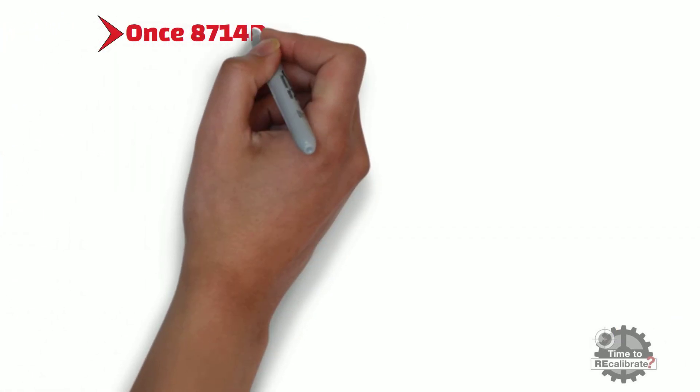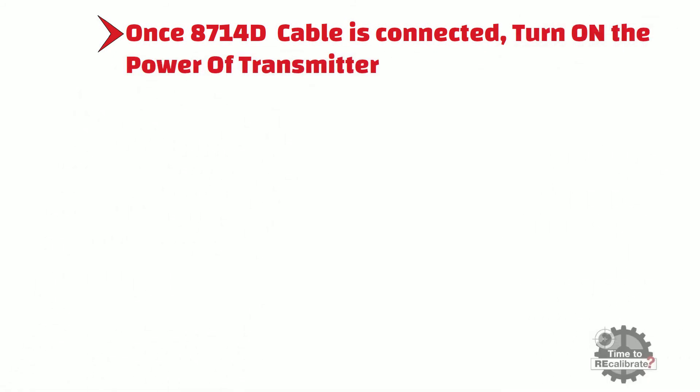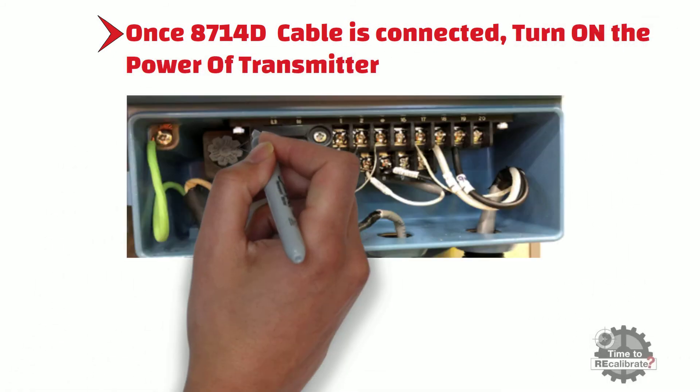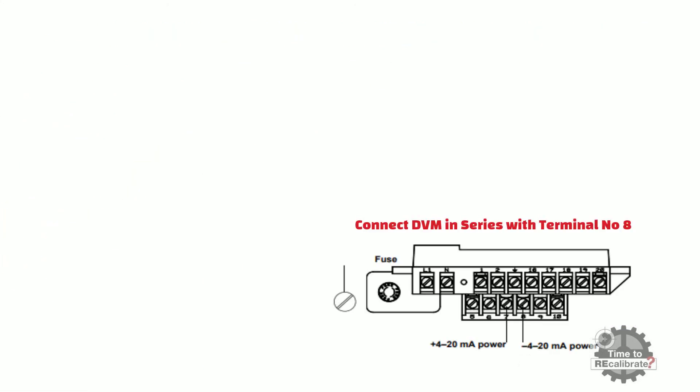Step 7: Once the cable is connected to the transmitter and simulator, turn on the power of the transmitter. To power up, push the power fuse gently inside and rotate in the clockwise direction. Now disconnect terminal number 8 and connect a digital voltmeter in series with this terminal to measure the milliampere output reading of the transmitter. At this stage, everything is set up and we are ready to perform the verification test.